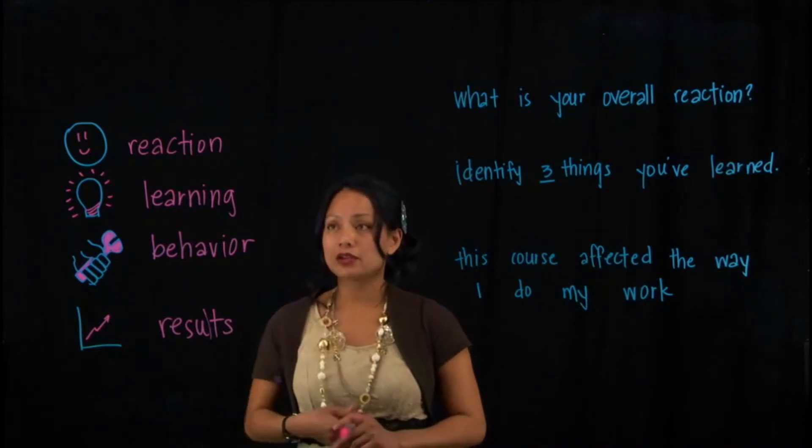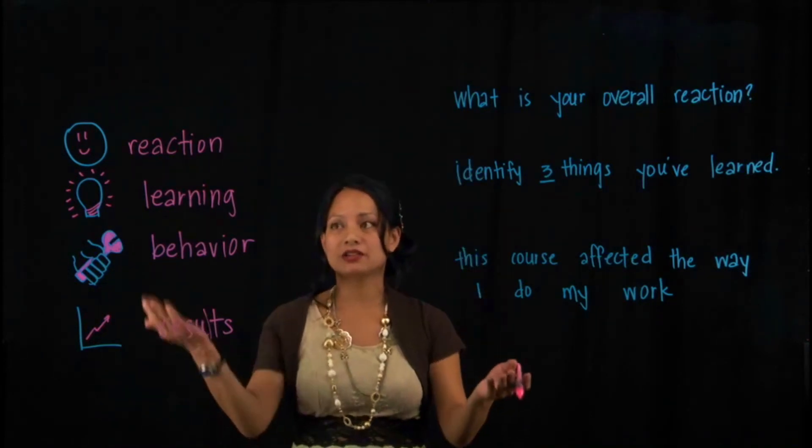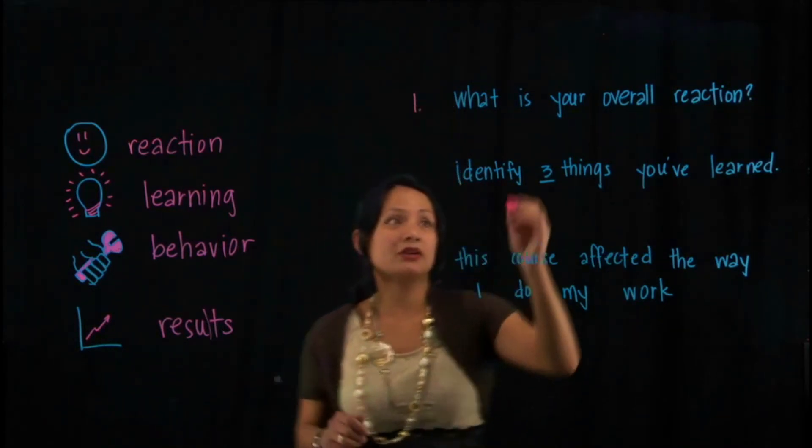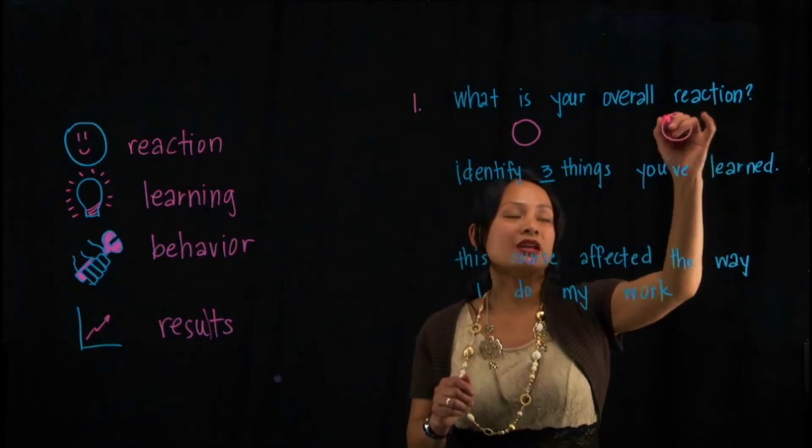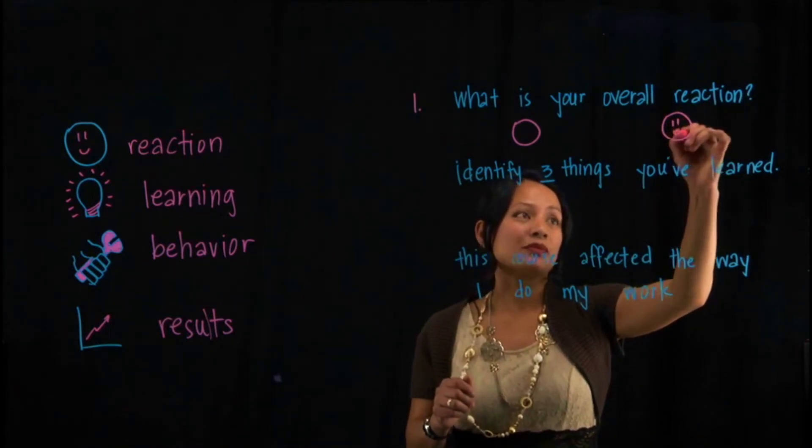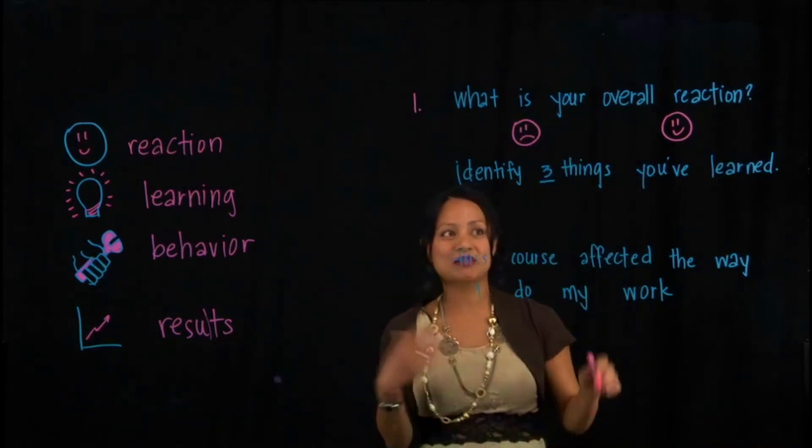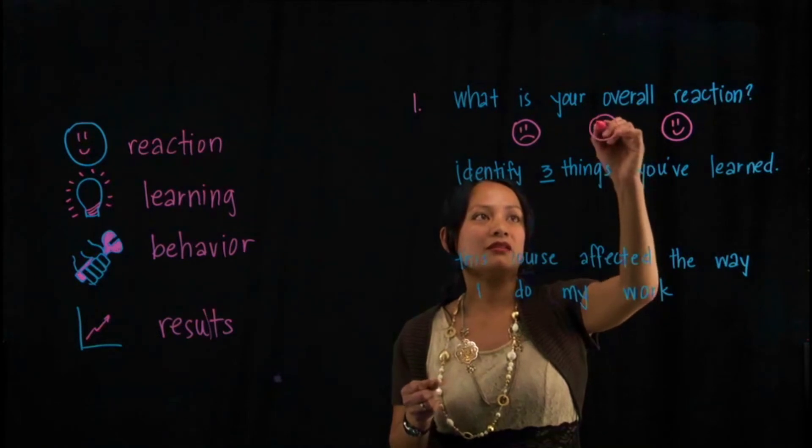So your evaluation can be very simply a set of three questions that are tied to these different levels. So for example, if you want to know how people feel about your course, you can ask the question, what is your overall reaction? And you can very simply even have what are known as smiley faces and have them circle the smiley faces to determine how they feel.